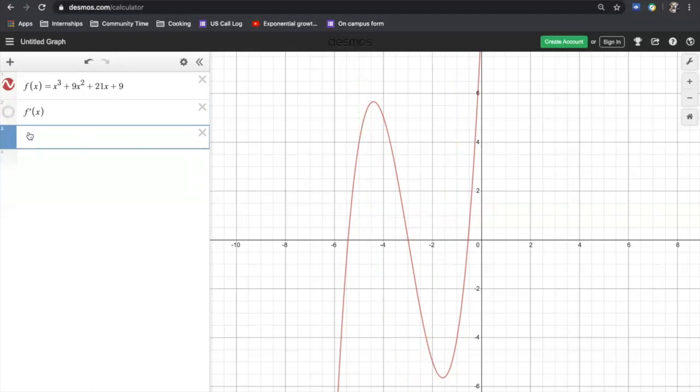Now I'm going to turn off that first derivative and graph the second derivative. Now hopefully to no one's surprise, the second derivative is a linear function. Now let's talk about what this linear function tells us about our original function f.